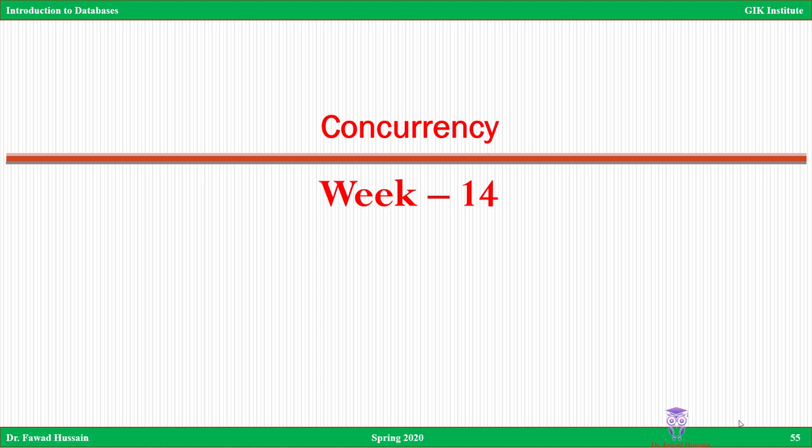Bismillahirrahmanirrahim. In this lecture we are going to talk about concurrency in databases. If you recall in the last lecture, we discussed transactions and whether a transaction is serializable or not, and by looking at the precedence graph we were able to figure out whether that transaction can be serialized as it is or not. But we did not propose any solution for those transactions that were not serializable — what to do with them.